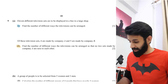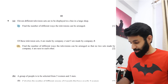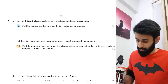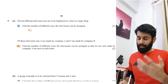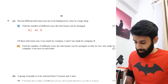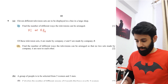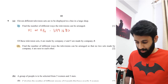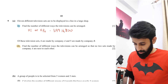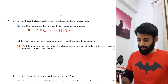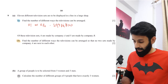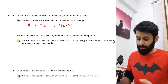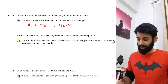So without wasting any more time, let's get straight to it. It says: 11 different television sets are to be displayed in a line in a large shop. Find the number of different ways the televisions can be arranged. If you have 11 different televisions and you want to arrange all 11 of them, you do 11 factorial, or 11P11, which is essentially the same thing. So 11 factorial equals 39,916,800. You don't round off exact answers.